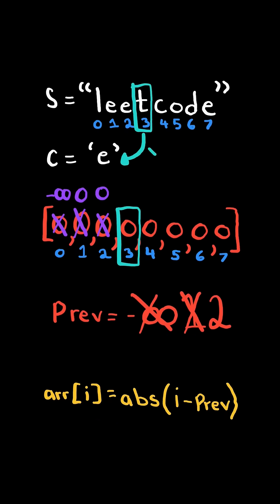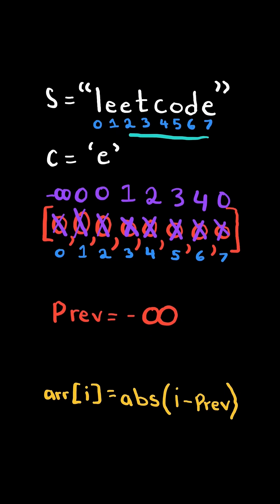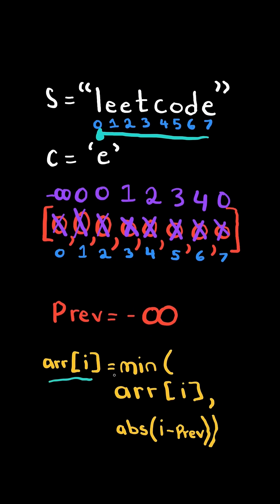In this case, the character does not equal c, so we don't update previous, but we calculate the distance. At the end, we reset previous, iterate backwards through the string, and update array at i to the minimum of the current value or the difference.